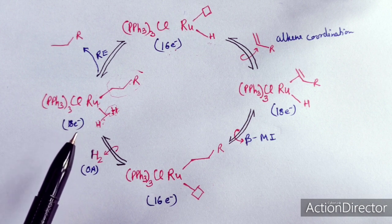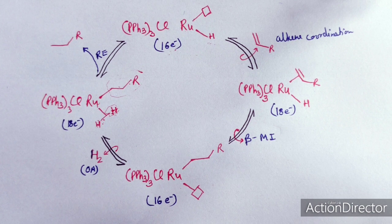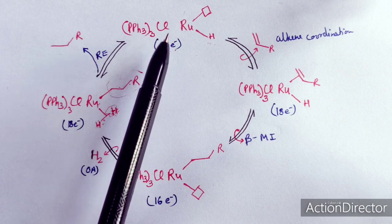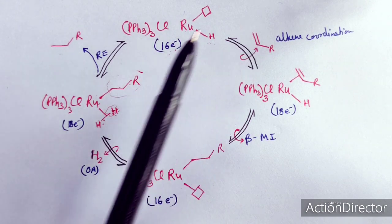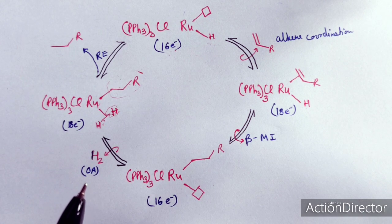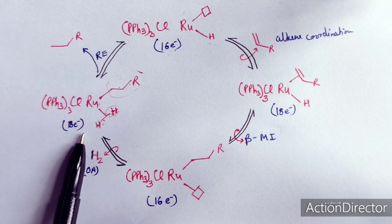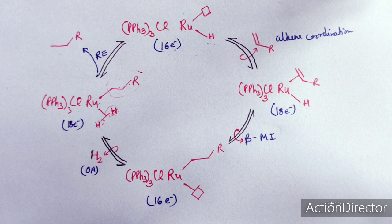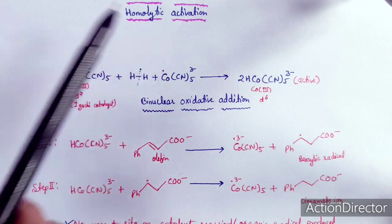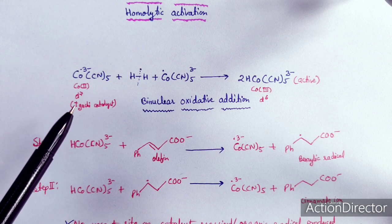In this catalytic cycle, the olefin adds first, then beta migratory insertion occurs, followed by oxidative addition of H₂ just before reductive elimination. This is the catalytic cycle where the hydrogen molecule is activated through heterolytic cleavage. Now, coming to homolytic activation of hydrogen — this takes place with Ikuji's catalyst.